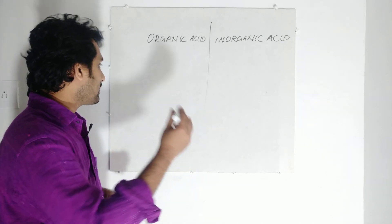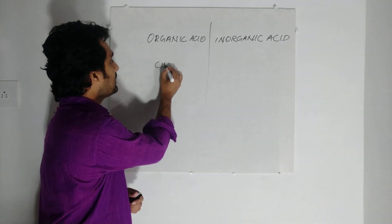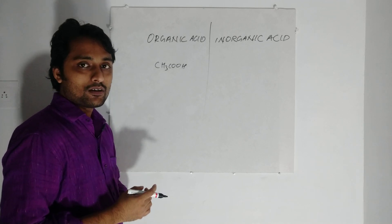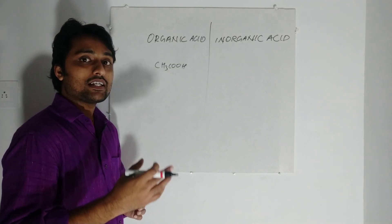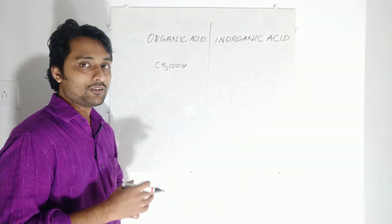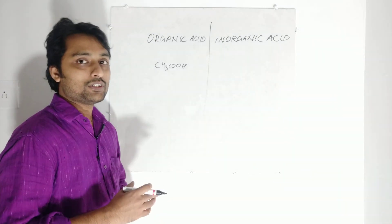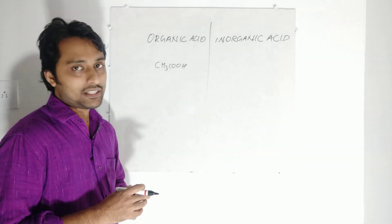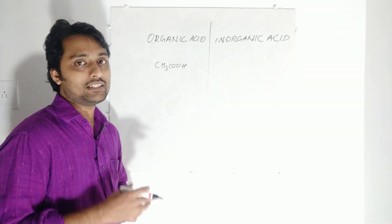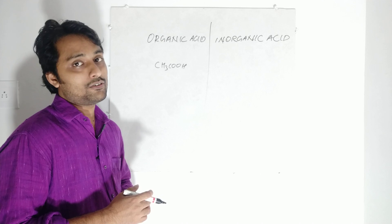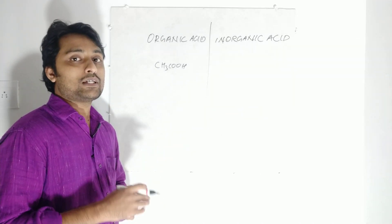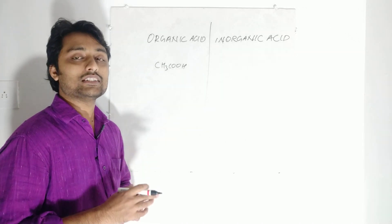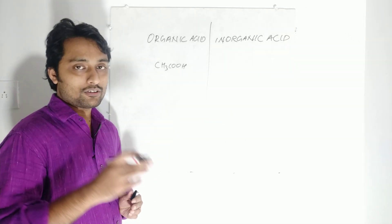For example: acetic acid (CH₃COOH), methanoic acid, oxalic acid, and tartaric acid. We already discussed these in the first video. Tamarind contains tartaric acid, and ants — or nettles — inject methanoic acid, also called formic acid. Lemon contains citric acid, and tomato contains oxalic acid.